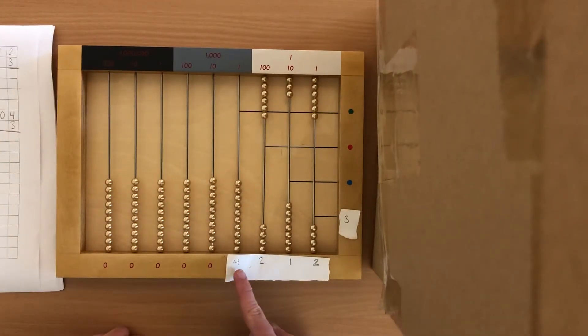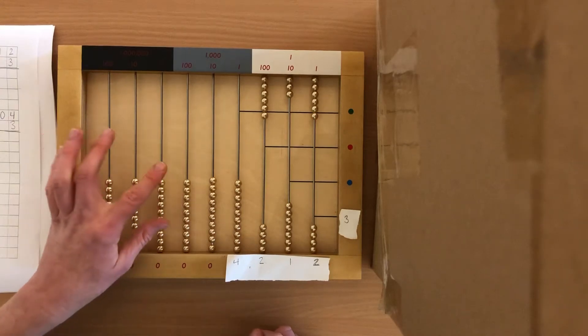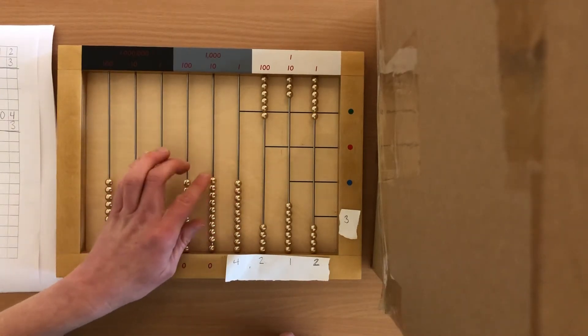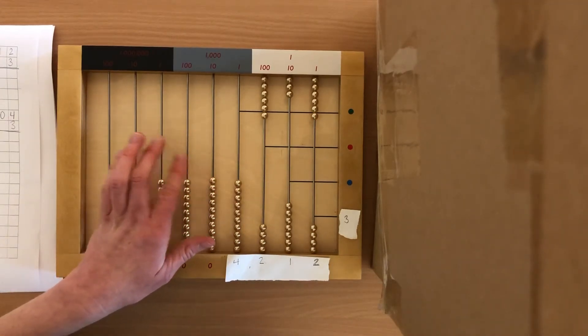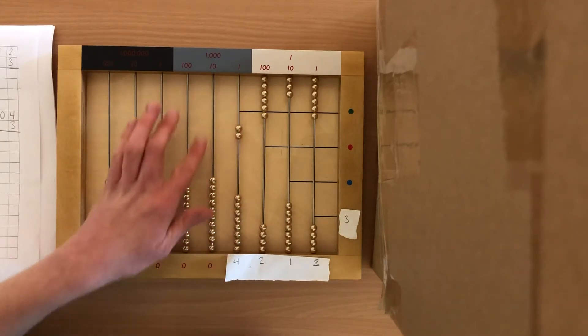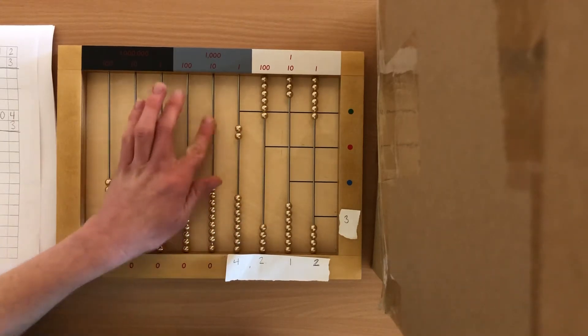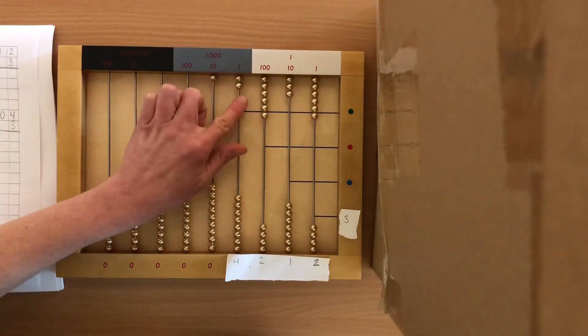3 times 4, thousands. And that is, so 3 times 4, we know that is 12. Okay, so how we're gonna show that on the bead frame, just like you would in LBF, we do 2 here, 1 there. So that's your 12.